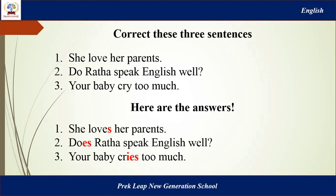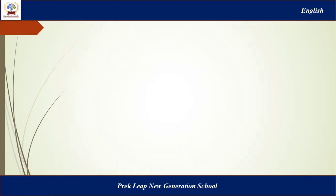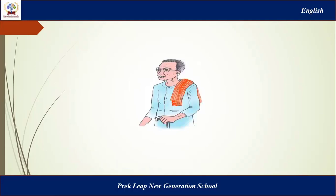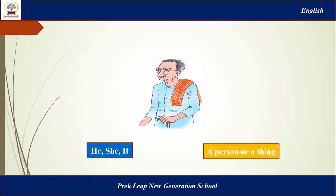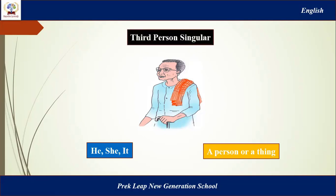Now let's go to another very necessary point. Can you guess who this is? He is a person, right? So what do we call He, She — a person or a thing? For example: My sister, My father, My daughter, Mr. Sohmat, Mr. Roserete, My dog, My car, My laptop. What do we call all these things? They are called third person singular.